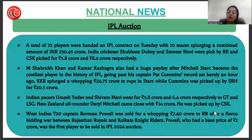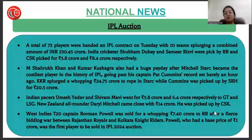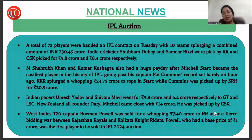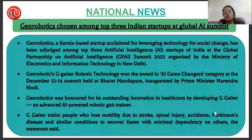West Indies T20 captain Rovman Powell was sold for a whopping 7.40 crore to Rajasthan Royals after a fierce bidding war between Rajasthan Royals and Kolkata Knight Riders. Powell, who had a base price of one crore, was the first player to be sold in the IPL 2024 auction.